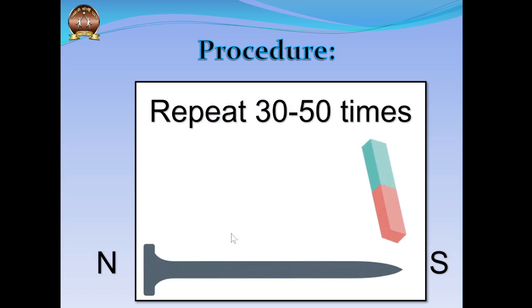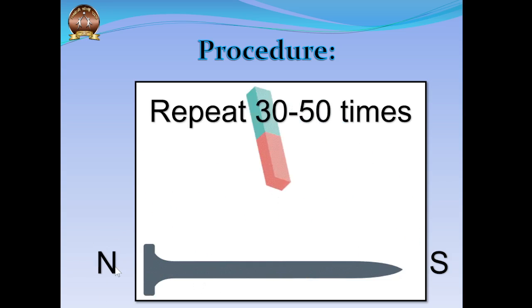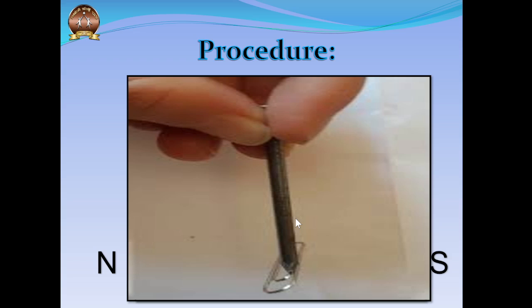When you have stroked it enough times, the end where you began the stroking action will develop into the north pole of the magnet, and the opposite end will develop into the south pole. If you were stroking with the south pole of the bar magnet, it would be reversed. After doing it enough times, the needle will start behaving like a bar magnet and will be able to attract magnetic materials like paper clips.